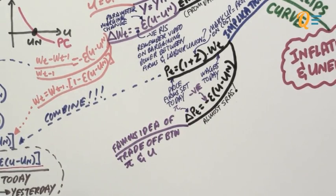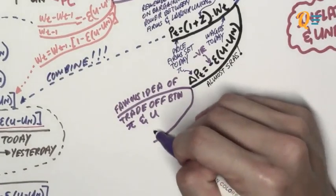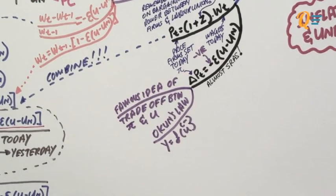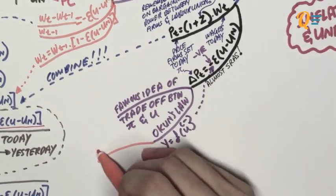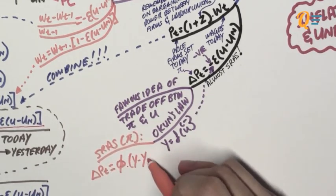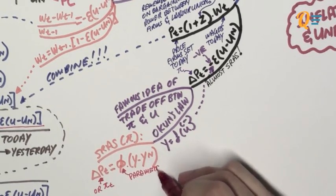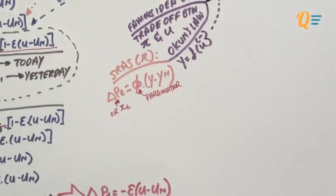So how do I transform this into the SRAS function? We're going to use Okun's Law, which says there is a negative relationship between GDP and unemployment. Replacing unemployment with income means multiplying a negative by a negative, which is a positive. So the SRAS as a function of inflation looks like this: pi-t, with a parameter showing the effect of a deviation from the natural rate of output on the inflation rate. That is your slightly more advanced SRAS function.